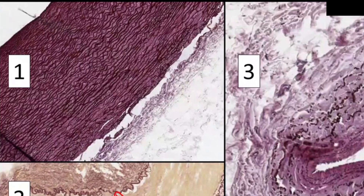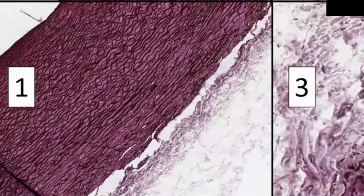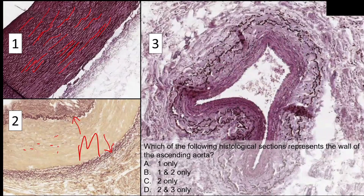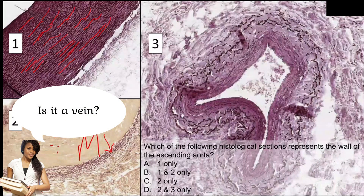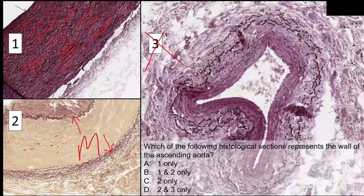In the elastic artery, the tunica media is formed of multiple lamellae of elastic fibers, so that during ventricular diastole they will rebound, undergo elastic recoil, and maintain a continuous stream of blood. So number one goes better with an elastic artery. What about three? There is no internal elastic lamina or external elastic lamina. The lumen is distorted because it's a vein — this definitely doesn't go with the aorta.